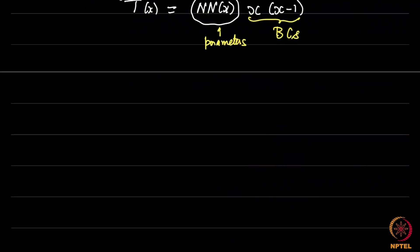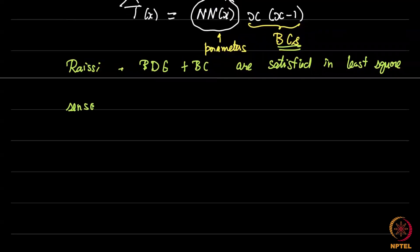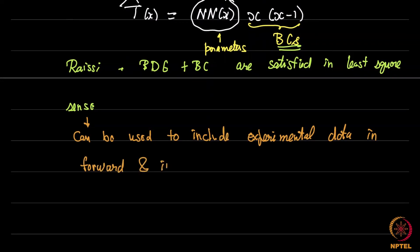On the other hand, in the Raissi approach, both PDE, which is the physics, as well as the boundary conditions are satisfied in a least square sense. Now, the Raissi approach has a few disadvantages. Of course, the boundary condition is not satisfied exactly and you need to play with certain parameters. I am not discussing that here. Maybe I will discuss it next week if time permits. But it has the major advantage that can be used to include experimental data in forward simulations. Turns out the same thing also helps in inverse simulations.